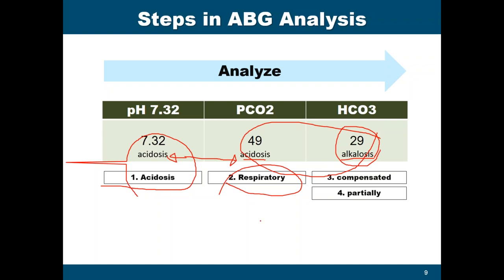What I would like to remind you: you only indicate whether the compensation is partial or full when the imbalance is compensated. Because this pH is 7.32 and it is abnormal, it is only partially compensated.